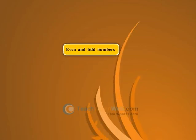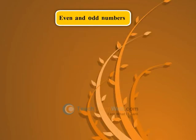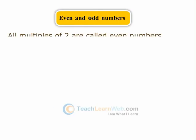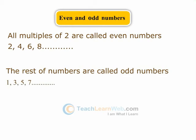Even and Odd Numbers. All multiples of 2 are called even numbers. The rest of the numbers are called odd numbers.